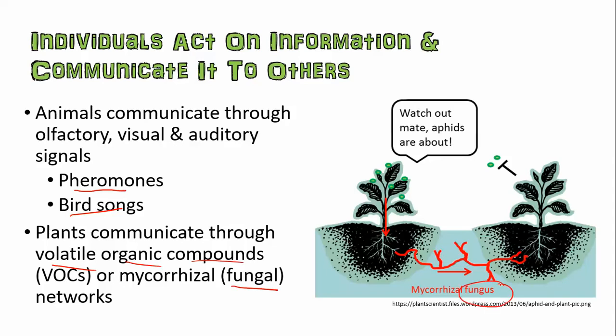A lot of that plant communication is either through volatile organic compounds (VOCs) or through fungal networks that interconnect their roots. Here we see a fungal system interconnecting the roots of two plants. One plant has some sort of herbivorous animal like aphids on it. It communicates that through the mycorrhizal fungal network — usually through some sort of chemicals — which are received by the roots of the other plant, which can then produce chemicals to block the aphids. It's literally like one plant is telling its neighbor, 'Hey, there are aphids around. Don't let them eat you.'